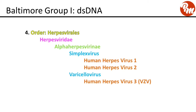The next group is order herpes viralis, family Herpesviridae, subfamily alpha herpesvirinae, genus simplex virus, with human herpes virus 1 and human herpes virus 2. The next genus is varicello virus, with human herpes virus 3, which causes chicken pox in children and shingles in older adults.